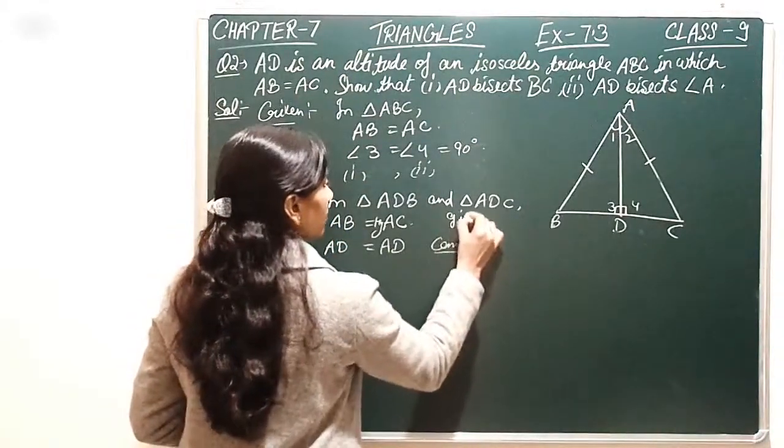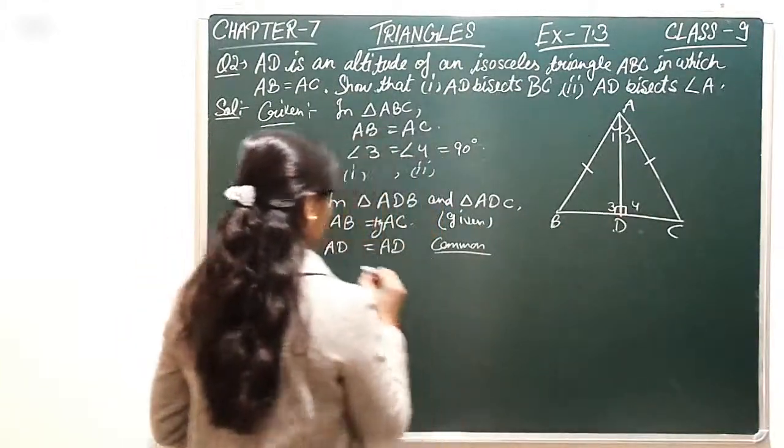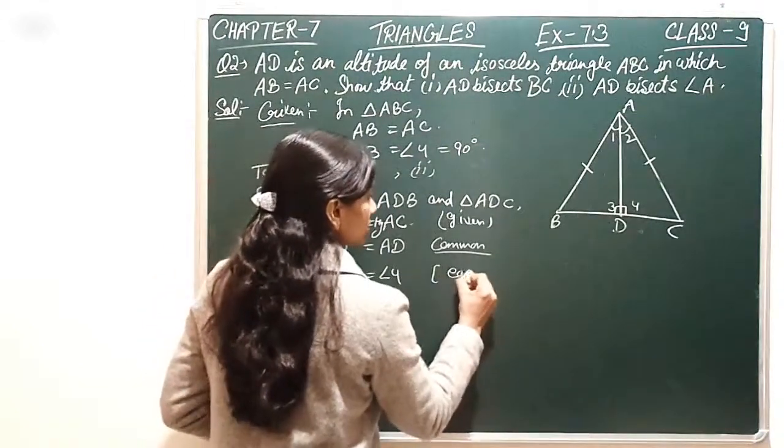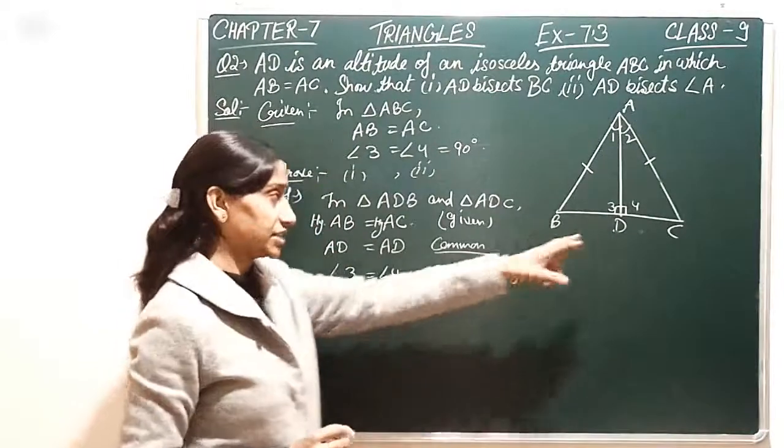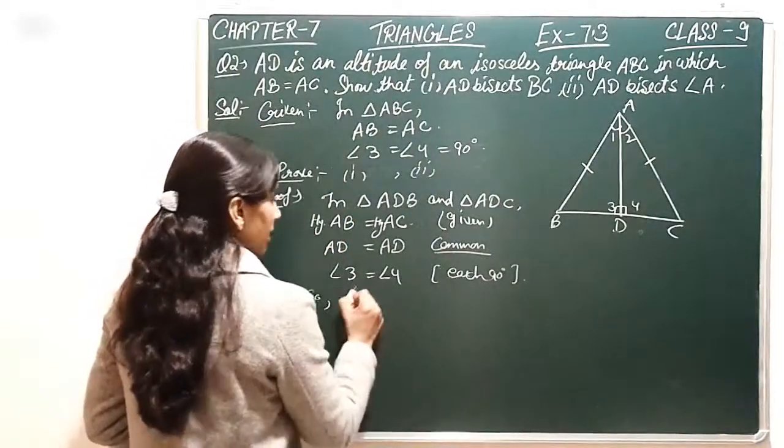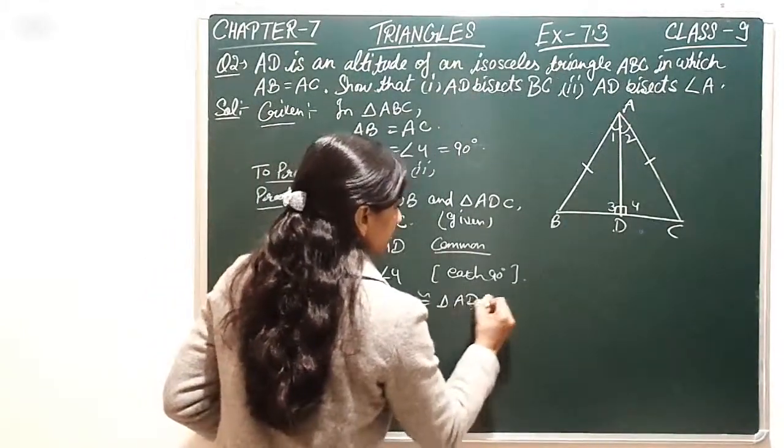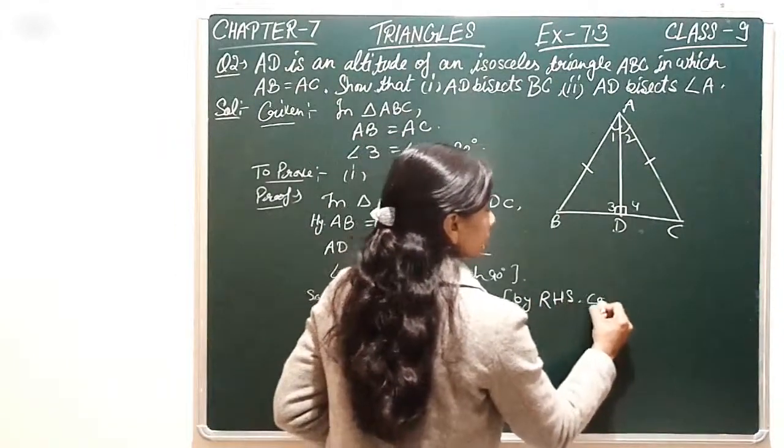And this is right angle 3, and this is right angle 3 is equal to angle 4. Angle 3 is equal to angle 4, each 90 degrees. This is 90 degrees because this is the altitude drawn. So triangle ADB is congruent to triangle ADC by RHS congruence rule.